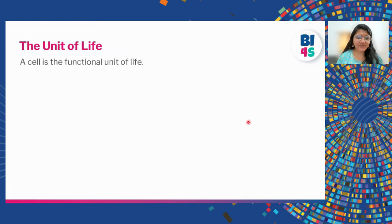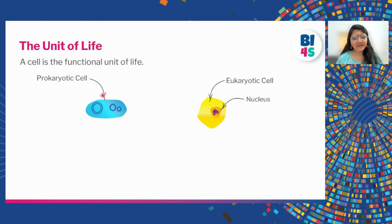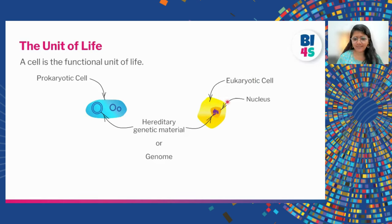A cell is the functional unit of life, which means that a cell itself is enough to be called life. There are different types of cells. One type is called a prokaryotic cell — it is a very primitive, simple type which will have a cell body with something called genetic material. In the case of a eukaryotic cell, there are many sub-compartments; it's a bit more complex.